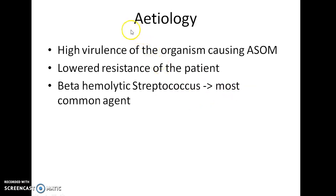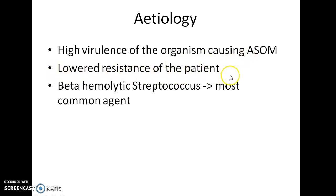The etiology of this disease: it can be caused due to high virulence of the organism causing acute suppurative otitis media. It can also be due to lowered resistance of the patient, such as in diabetes mellitus patients and patients taking corticosteroids. The most common causative agent in acute mastoiditis is beta-hemolytic streptococcus.